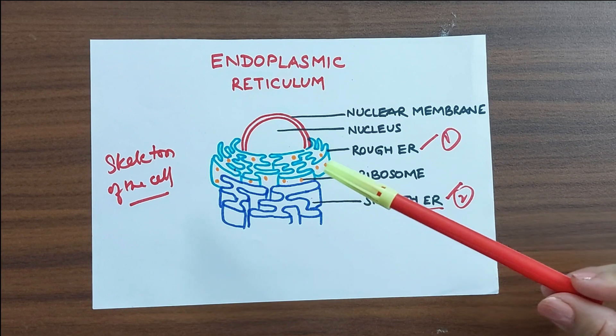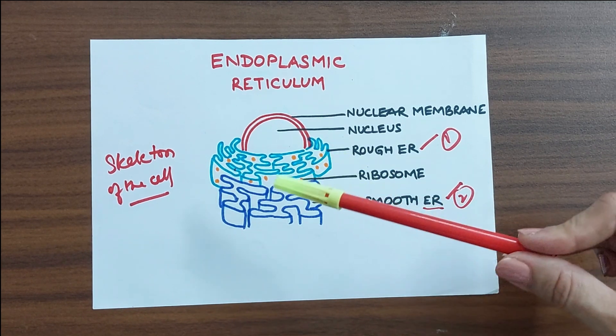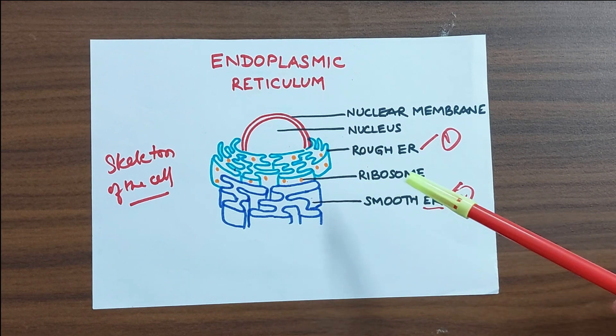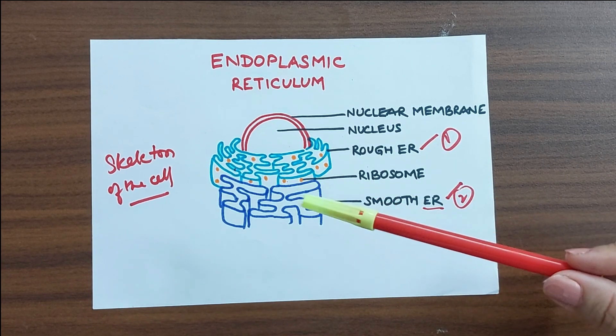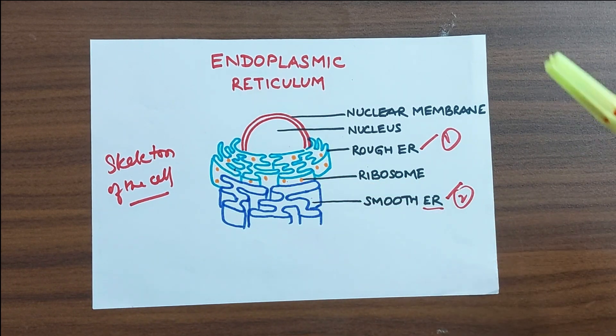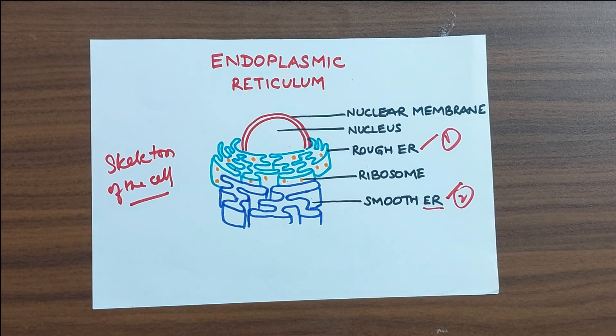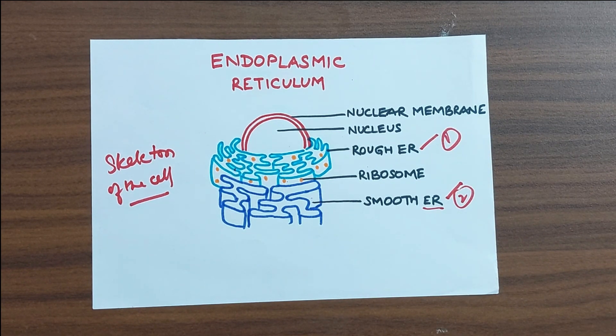Endoplasmic reticulum is of two types, the rough ER and the smooth ER. The rough ER is called so because under the microscope it appears rough because of the presence of these dot-like structures which are the ribosomes. And the smooth ER does not have these ribosomes and hence under the microscope they appear very smooth.